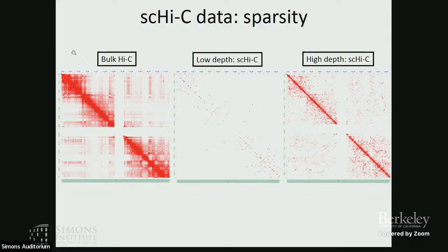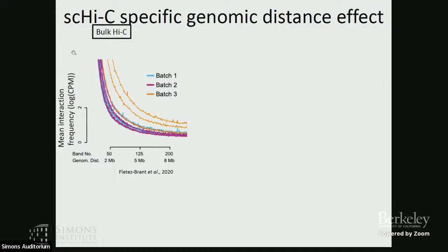This data is sparse, just like single-cell RNA-seq, but the sparsity level is much larger because we are looking at a larger space of the genome. Some of the sparsity is true because some regions of the genome simply don't interact with each other. Another typical data characteristic is what we call the genomic distance effect — regions on the genome that are nearby each other are just more likely to interact by chance.